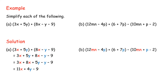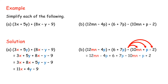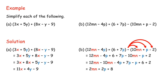Example B: 12MN minus 4P plus 6 plus 7P minus 10MN plus P minus 2. Gather the like terms, then add or subtract. Equals 2MN plus 2P plus 8.